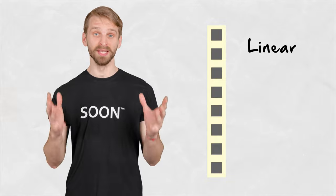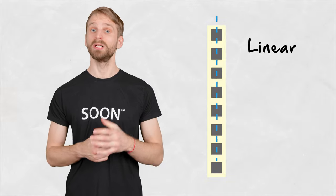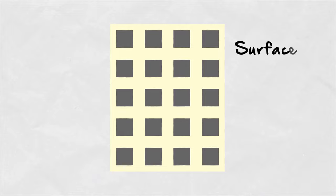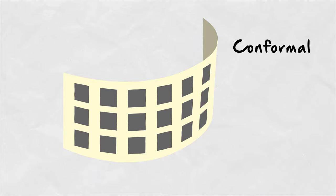Arrays can be linear, resulting in a changing radiation pattern along the array axis, surface resulting in changing radiation pattern along both axes, or conformal, to fit various surfaces of devices or larger systems.